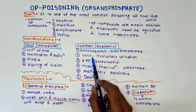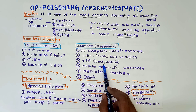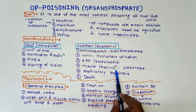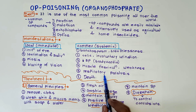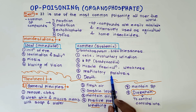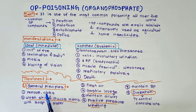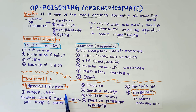Complex or systemic manifestations are more severe and include bronchospasm, breathlessness, colic, involuntary urination, decreased BP, bradycardia, muscle fasciculation, weakness, and respiratory paralysis leading to death. In these cases, death is mostly due to respiratory muscle paralysis.